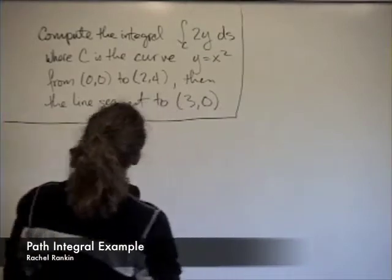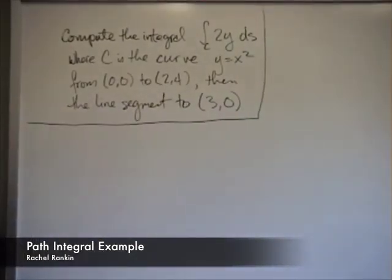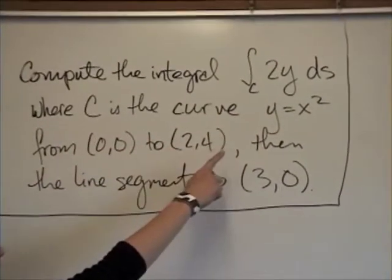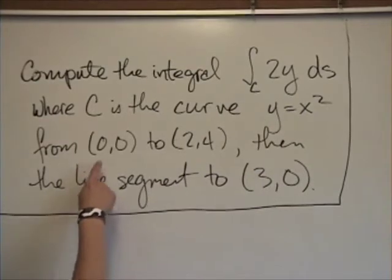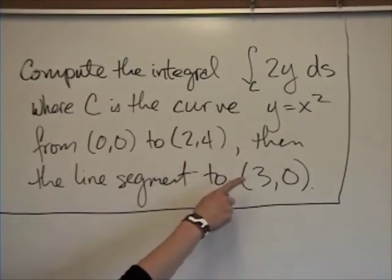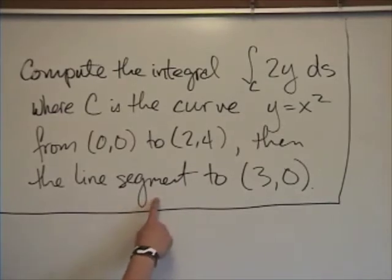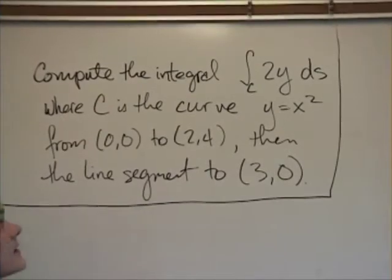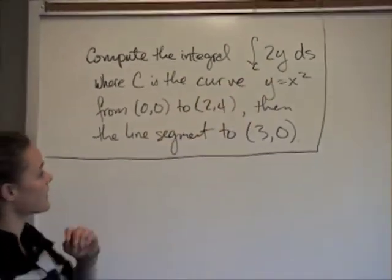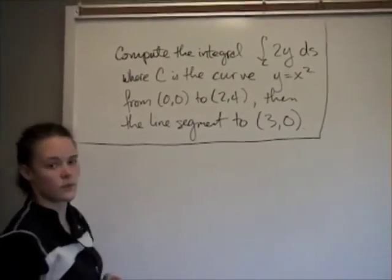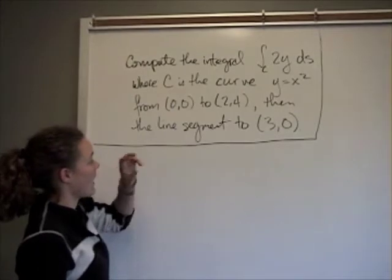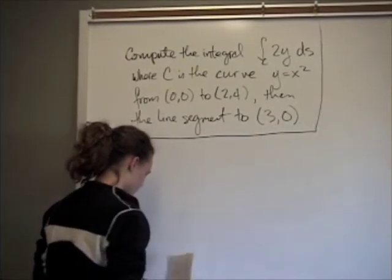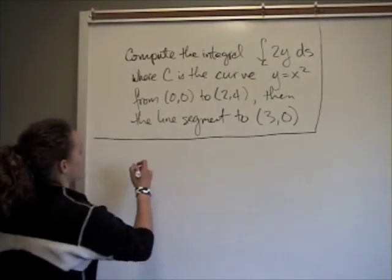In this example we're supposed to compute the integral where C is the curve y equals x squared from the point (0,0) to the point (2,4), and then the line segment to (2,3,0). This is a path integral because the integrand is a scalar function, and since it's a piecewise function we have to do two separate integrals.